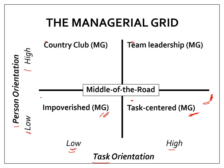The best leaders are called team leaders, according to the managerial grid. Team leaders care about people — they are high on person orientation — and they also care about tasks — they are high on task orientation. This combination makes them the best because they are productive and efficient, and at the same time, they are liked by their members. Try to classify your leaders into this managerial grid: are they country club leaders, team leaders, impoverished leaders, or task-centered leaders?